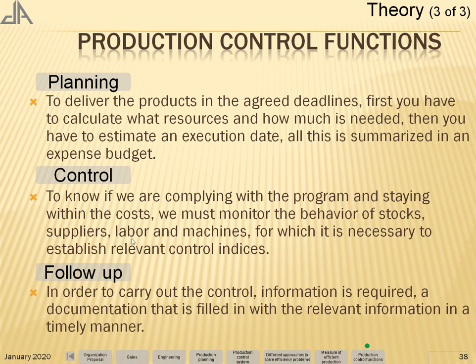Supplier, labor, and machines — for which it is necessary to establish relevant control indices for follow-up. In order to carry out the control, information is required: documentation that is filled in with the relevant information in a timely manner.